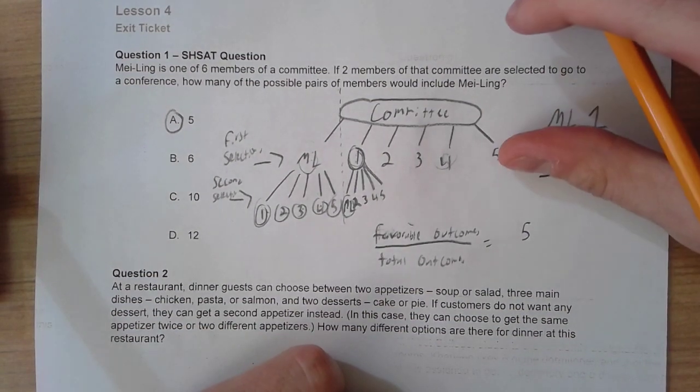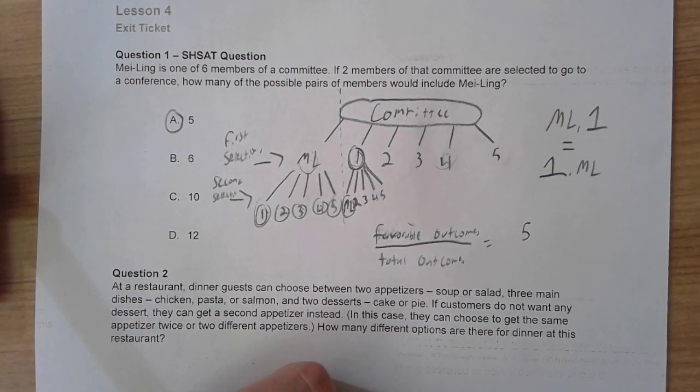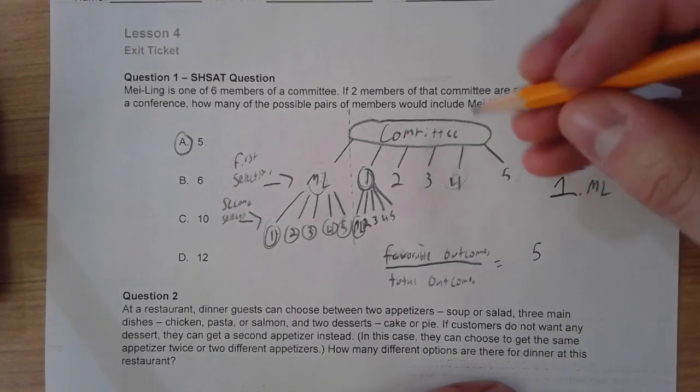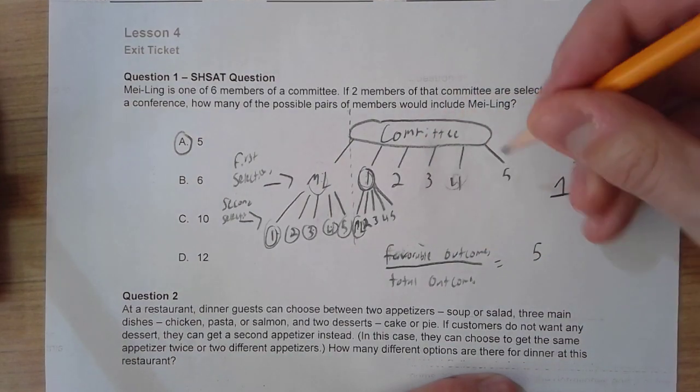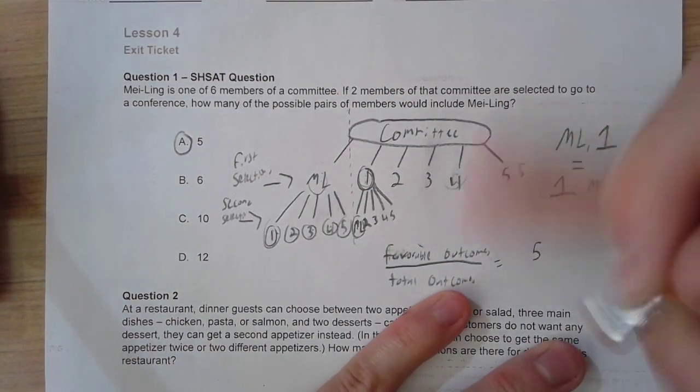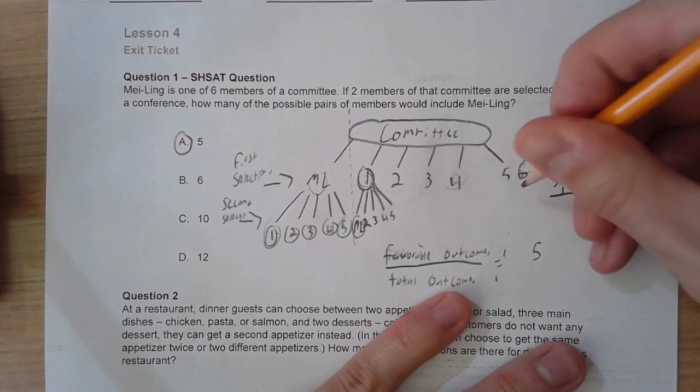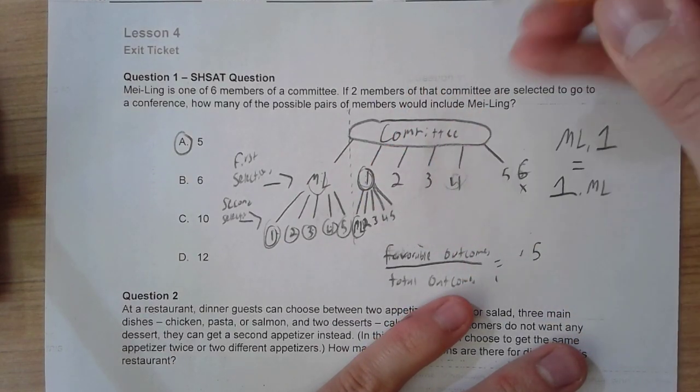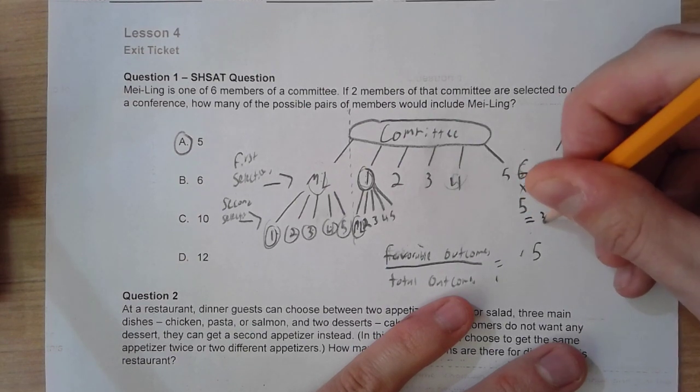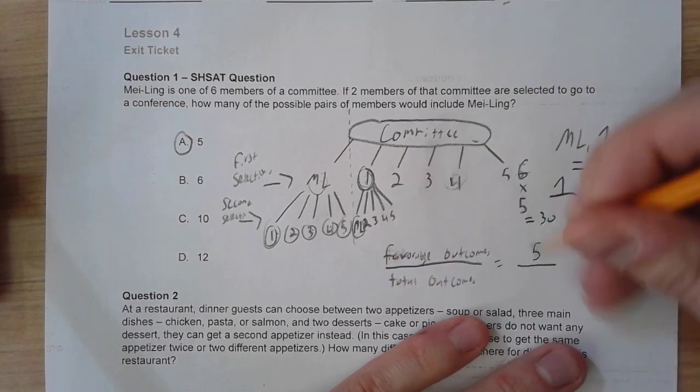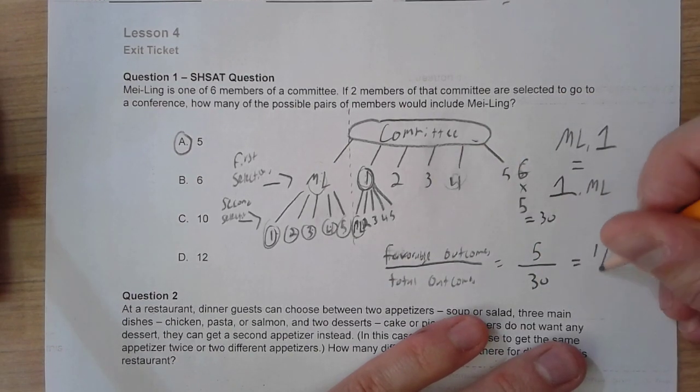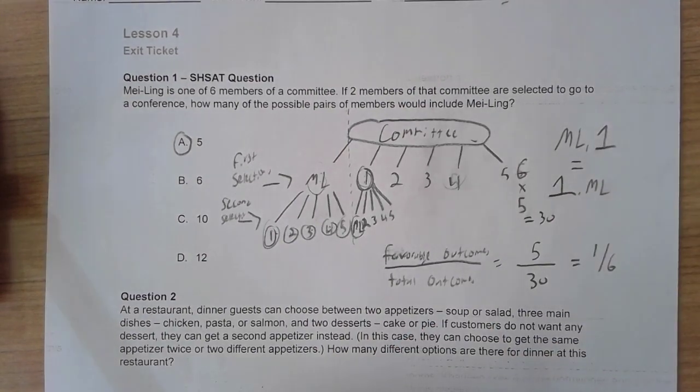If we wanted to continue this problem and find our probability of it being Mei Ling with somebody else, all we would simply have to do is calculate our total number of outcomes, which is going to be six original committee members times, in our second selection, there are only five options for each. So our total number is going to be 30. Favorable outcomes is five. Total outcomes is 30. So our total probability is going to be one-sixth. And there you have it.